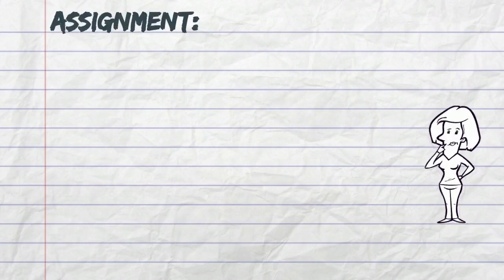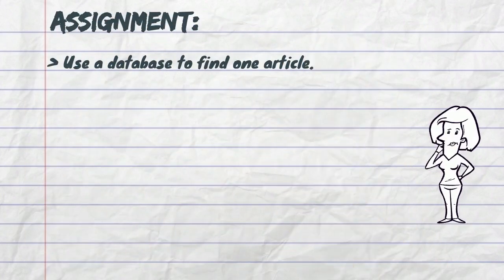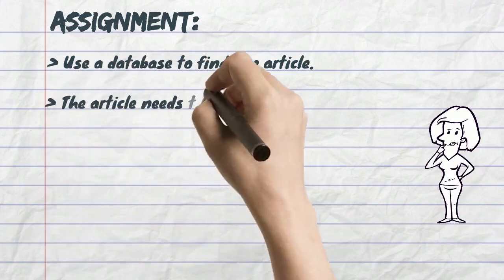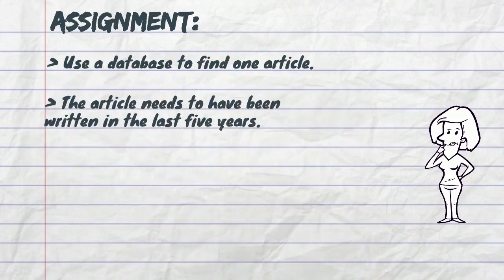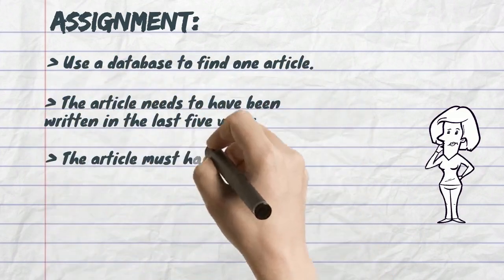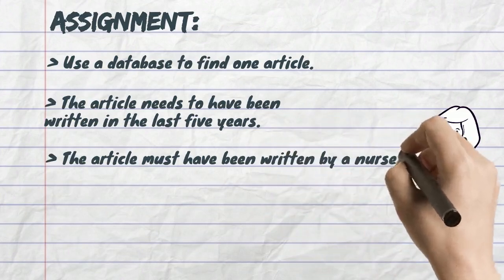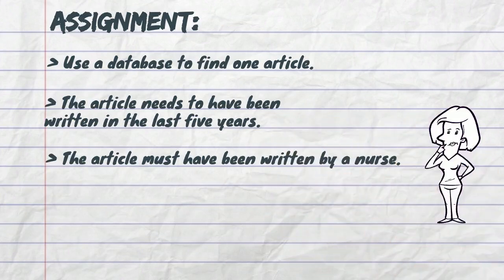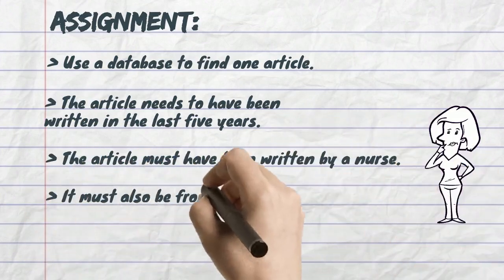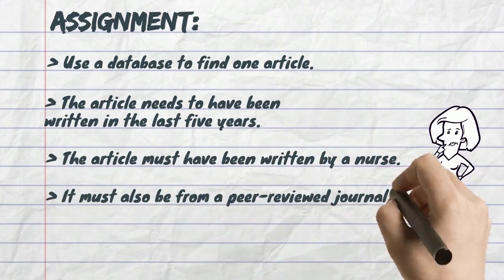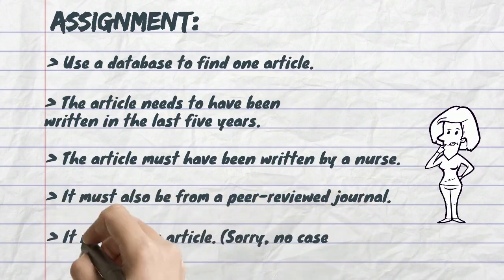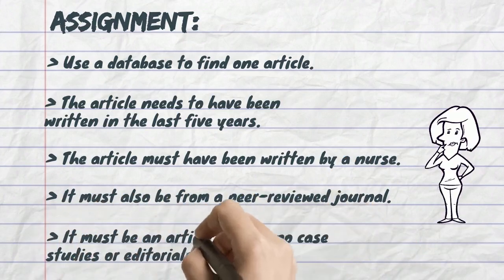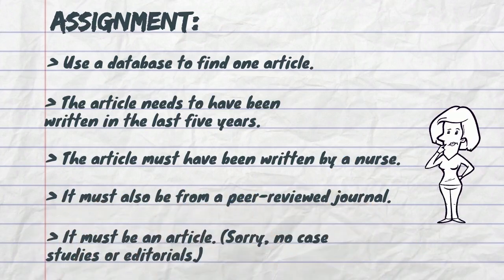Assignment: Use a database to find one article. The article needs to have been written in the last five years. The article must have been written by a nurse. It must also be from a peer-reviewed journal. It must be an article — no case studies or editorials.